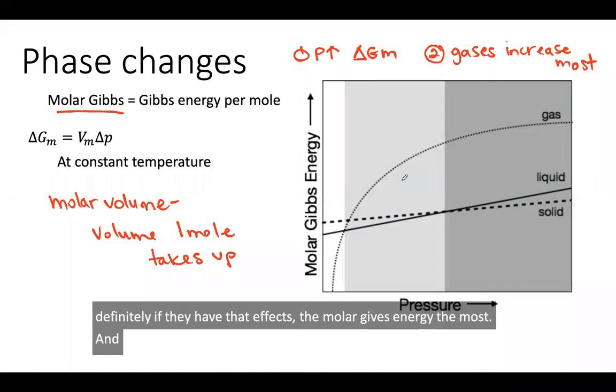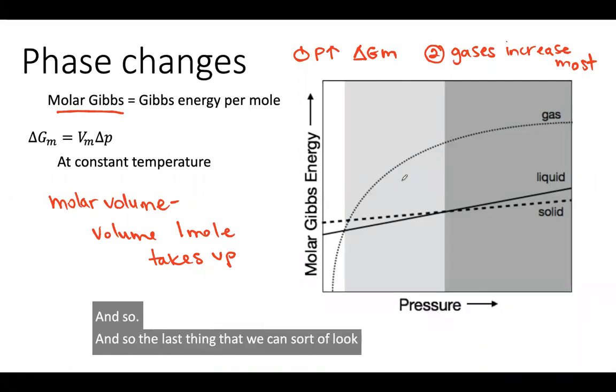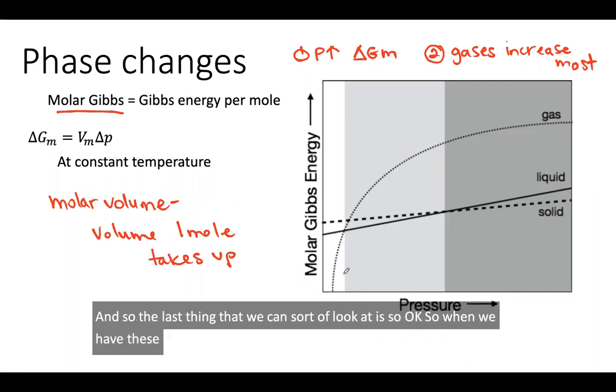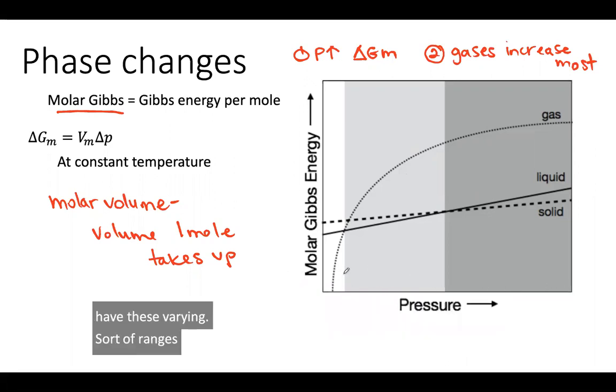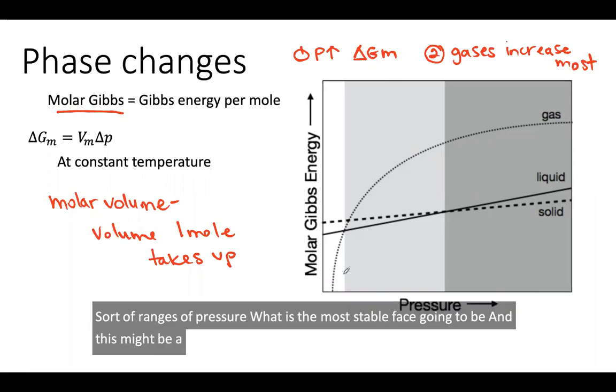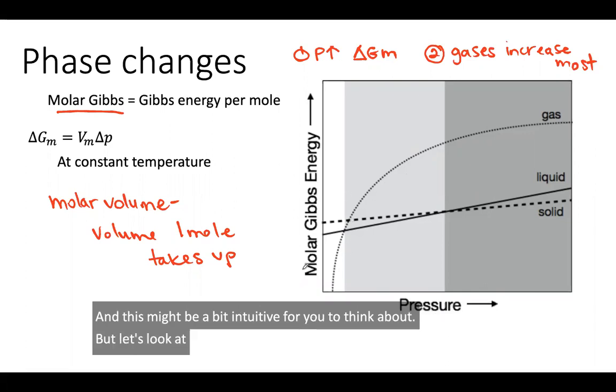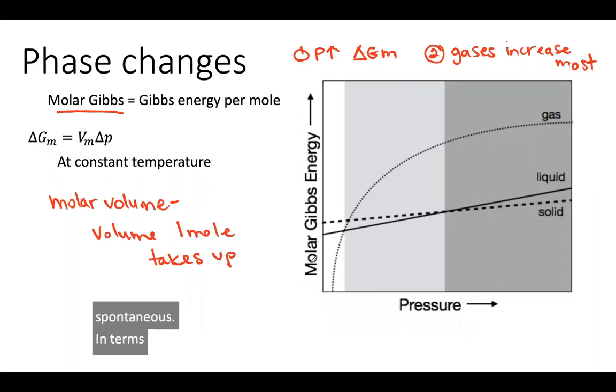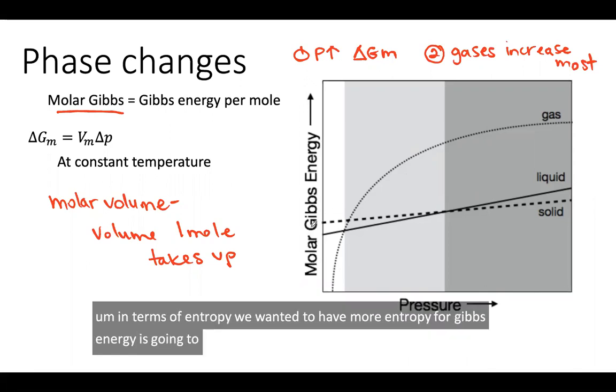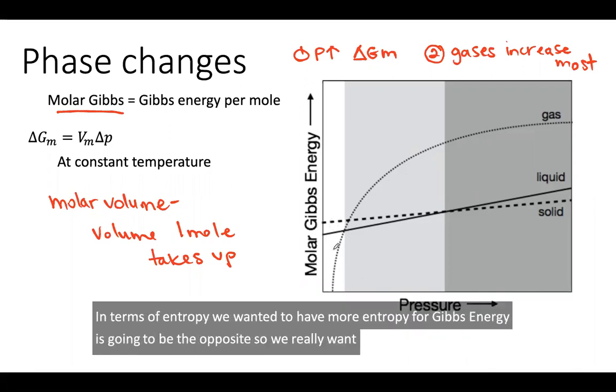The last thing that we can look at is when we have these varying ranges of pressure, what is the most stable phase going to be? Let's look at these trends. In order for something to be spontaneous, in terms of entropy, we want it to have more entropy. For Gibbs energy, it's going to be the opposite. We really want the lower Gibbs energy to be the most stable.